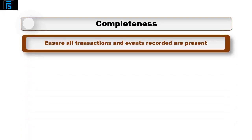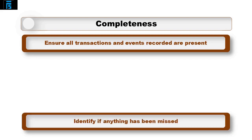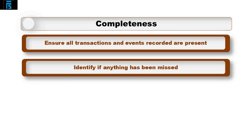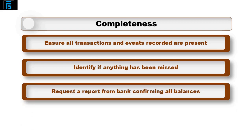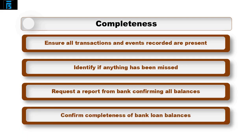The assertion completeness is to ensure that all transactions and events recorded are present in the financial statements. Audit tests would be designed to identify if anything has been missed. An example would be reviewing the bank balances including overdrafts. There is always a greater risk of items being missed in liabilities, so the auditor requests a bank report sent directly from the bank confirming all balances, including any loans and overdrafts held at the year end.